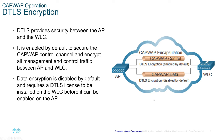The access point and WLC communicate through CAPWAP control tunnels using DTLS encryption enabled by default. On the CAPWAP data side, DTLS encryption is disabled by default and needs to be enabled manually after installing the encryption license keys.